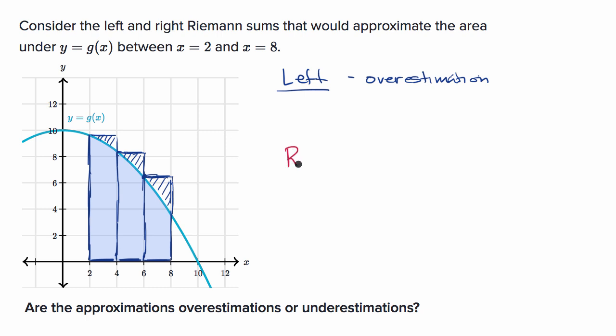Now let's think about the right Riemann sum, and you might already guess it's going to be the opposite. Let's visualize that. So let's just go with the same three subdivisions, but now let's use the right side of each of these subdivisions to define the height. For this first rectangle, the height is going to be defined by g of 4.